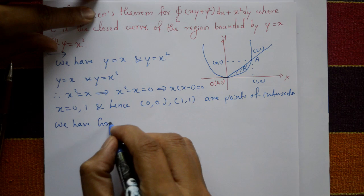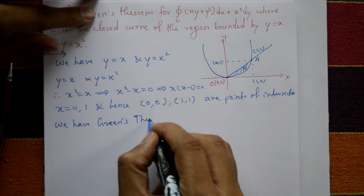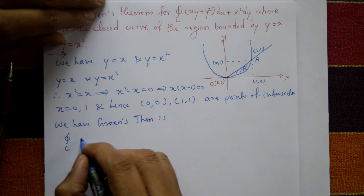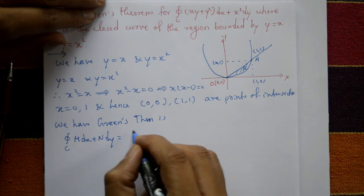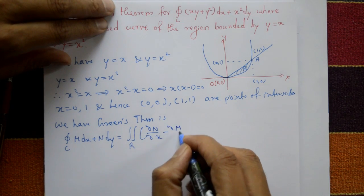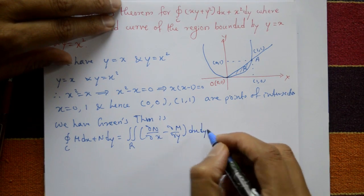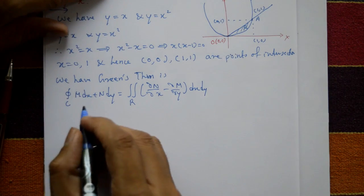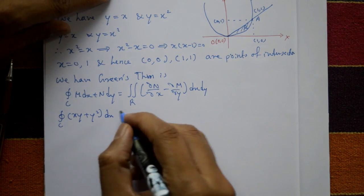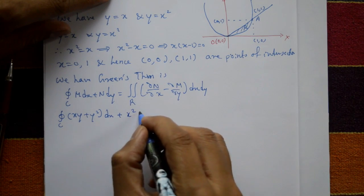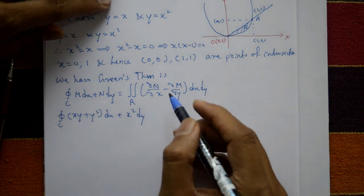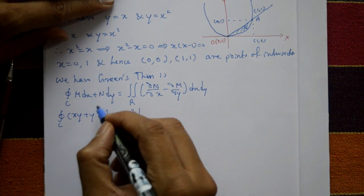Now we state Green's theorem: the closed curve integral ∮C M dx + N dy equals the double integral over region R of (∂N/∂x - ∂M/∂y) dx dy. Given the integral, we must verify that the left-hand side equals the right-hand side. We first prove the left-hand side.